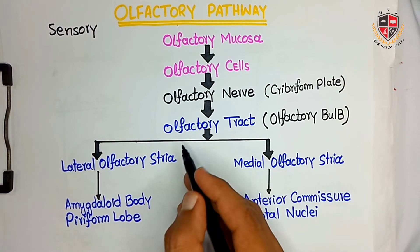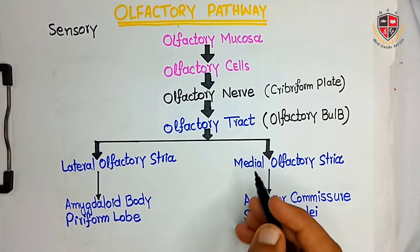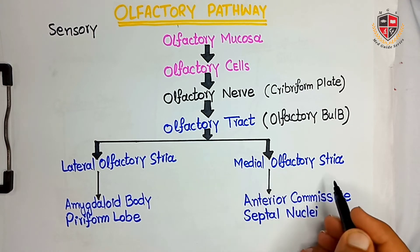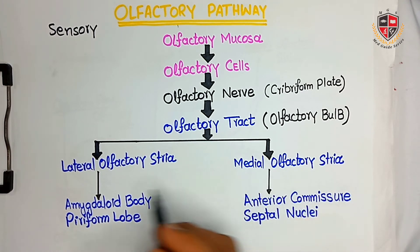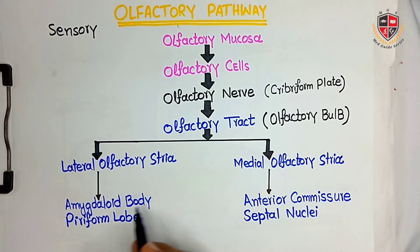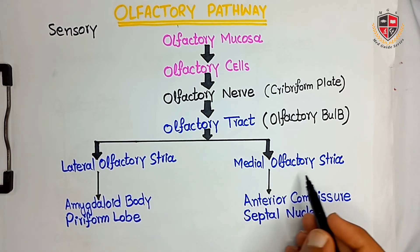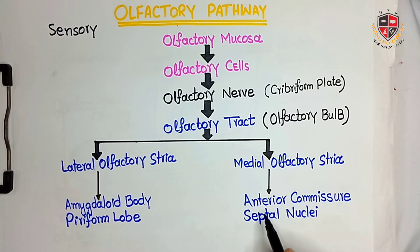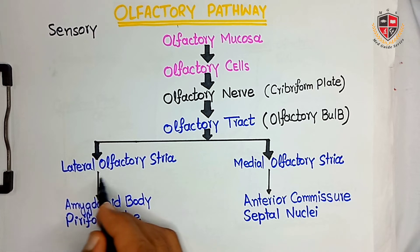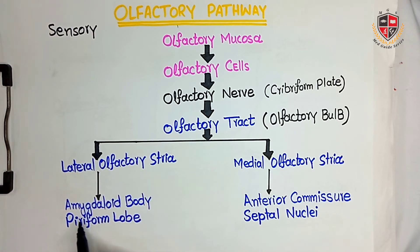The olfactory tract divides into the medial olfactory stria and the lateral olfactory stria. The medial olfactory stria terminates at the anterior commissure and septal nuclei, while the lateral olfactory stria terminates at the amygdaloid body and piriform lobe.